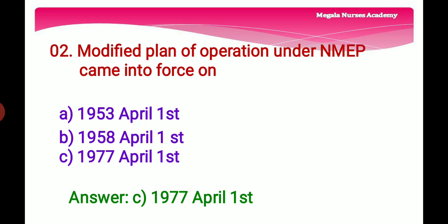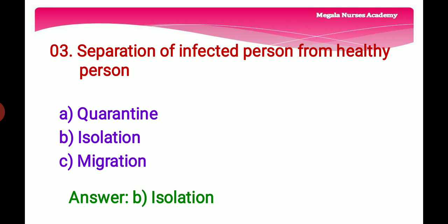Second question: The Modified Plan of Operation was launched in 1977 with a three-pronged strategy — early diagnosis and treatment, vector control, and IEC. The right answer is Option C, 1977 April 1st. The Modified Plan of Operation under the National Malaria Eradication Program came into force on 1977 April 1st.